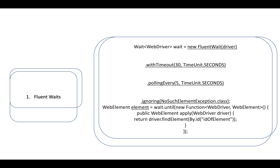Fluent wait is a more advanced type of wait used for handling very complex scenarios, like AJAX calls, where an element appears sporadically. If an interviewer asks where we can use fluent wait or how to handle AJAX, explain a scenario where an element sometimes appears in one second, sometimes two seconds, sometimes ten seconds, sometimes a fraction of a second.